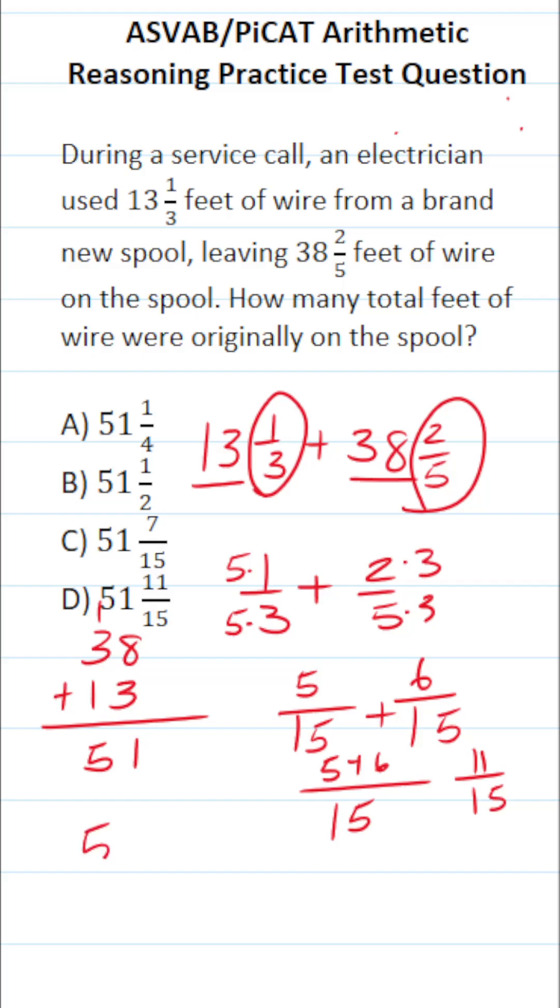So our answer is going to be 51, the result we got when we added our whole numbers, and 11 over 15, the result we got when we added our fractions. So this one is D.